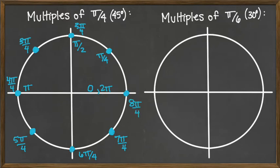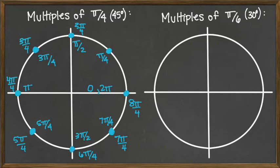Some of these reduce and some don't. 3π/4 is already in reduced form. 4π/4 reduces to π. 5π/4 doesn't reduce. 6π/4 has a common factor of 2, giving us 3π/2. 7π/4 is already reduced. And 8π/4 has a common factor of 4, giving us 2π as expected. So the angles written on the inside of the unit circle are just what you get by counting 1 through 8 and reducing.